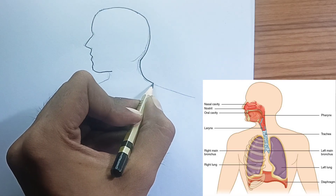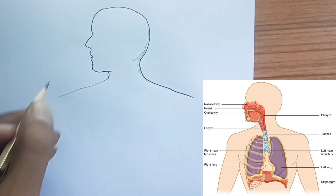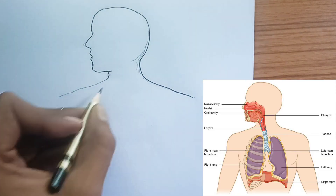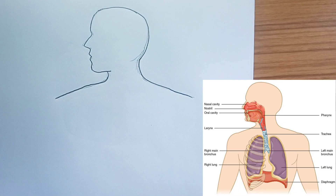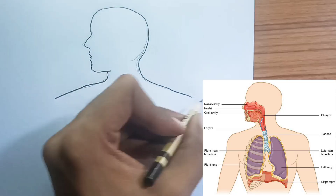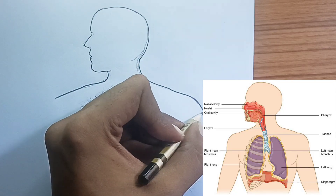Pharynx — the throat. From the nose and mouth, air passes into the pharynx, a common passageway for both air and food.